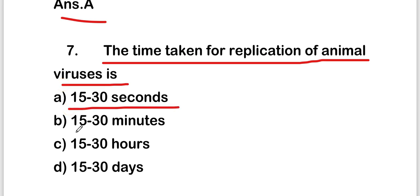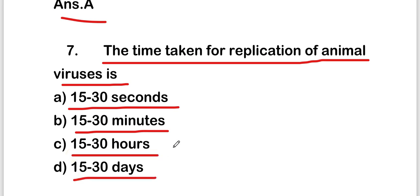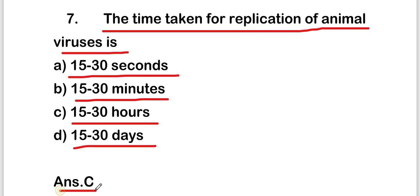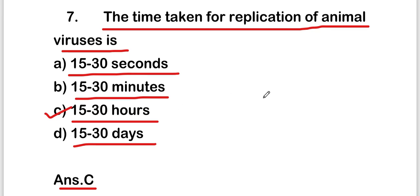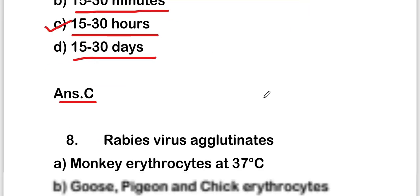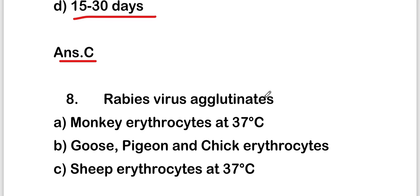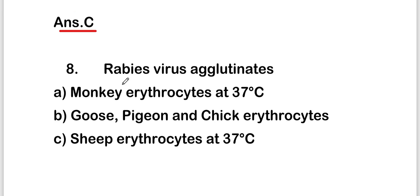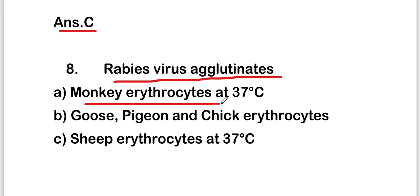The next question is: what is the time taken for replication of animal viruses? Options are 15 to 30 seconds, 15 to 30 minutes, 15 to 30 hours, or 15 to 30 days. The right answer is option C — 15 to 30 hours.